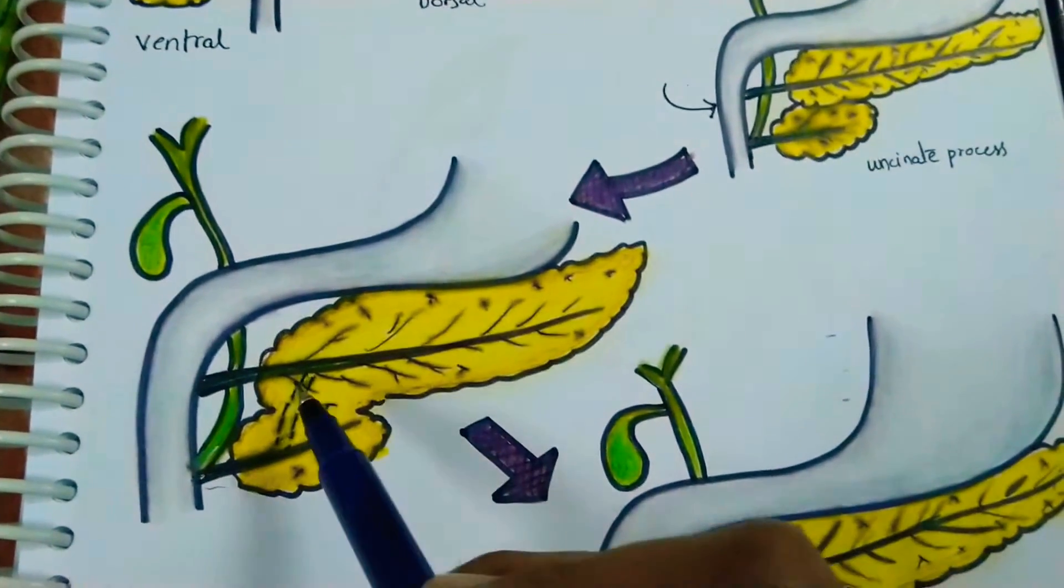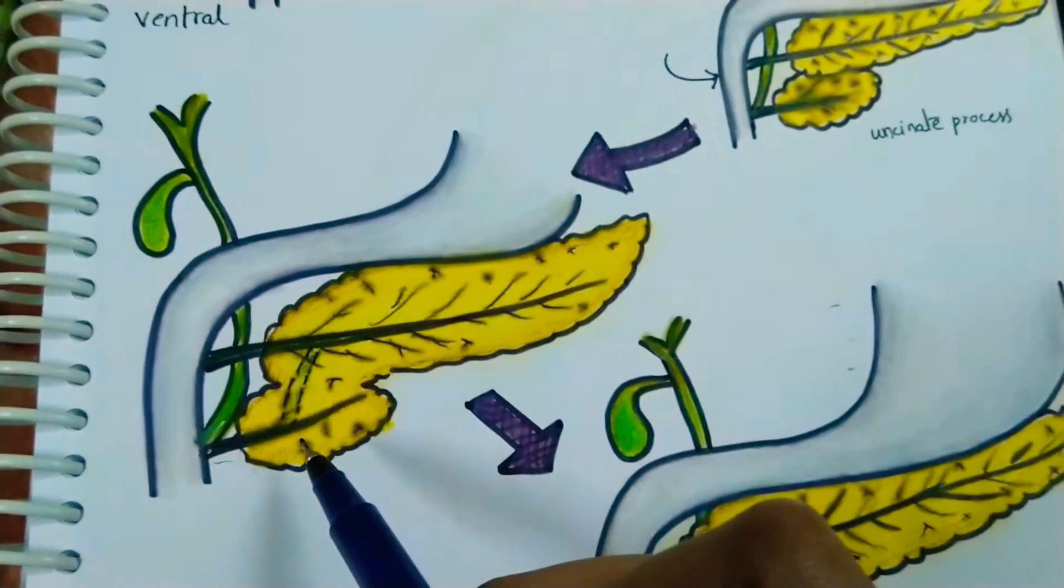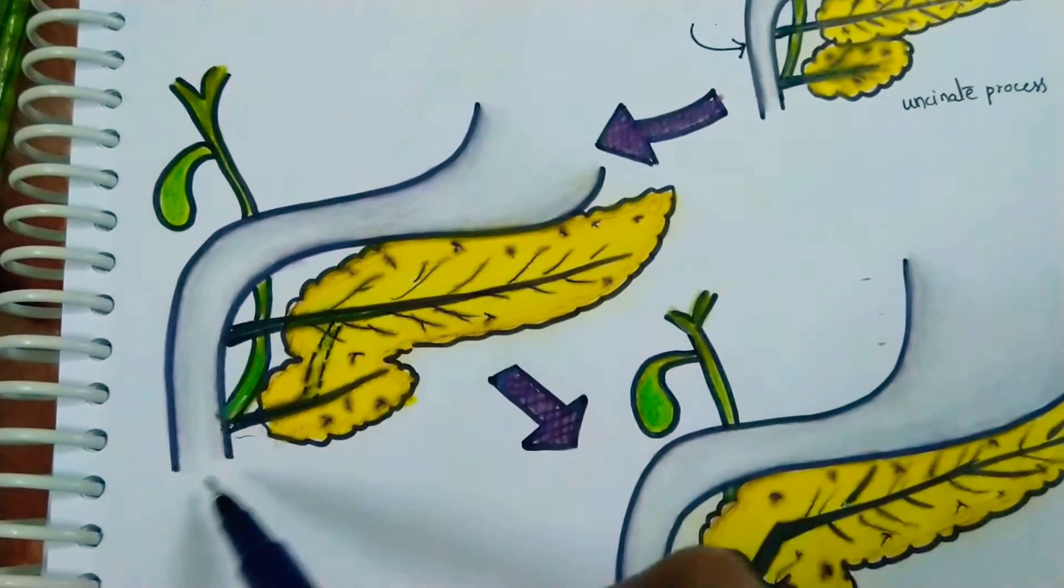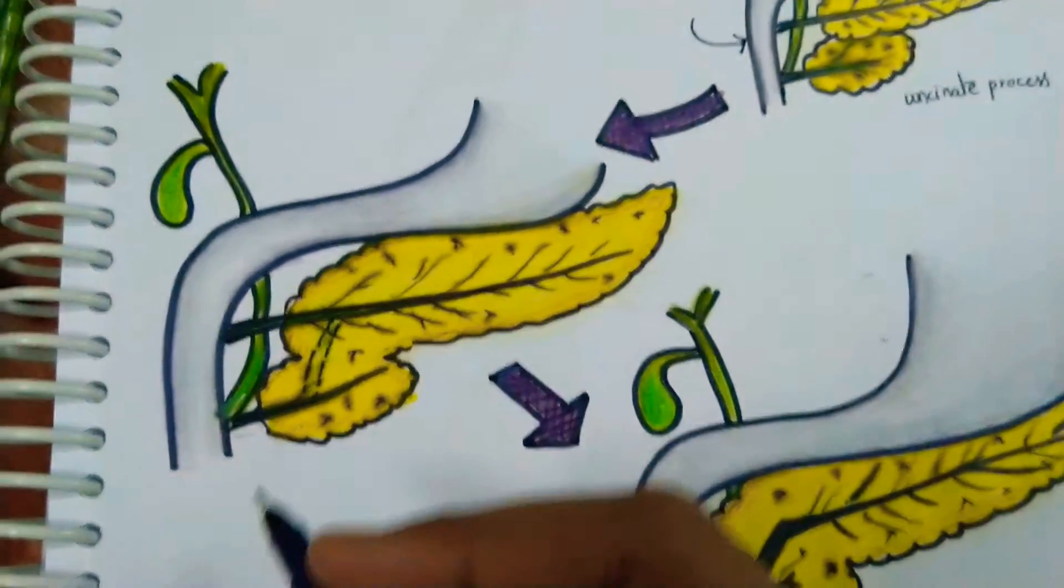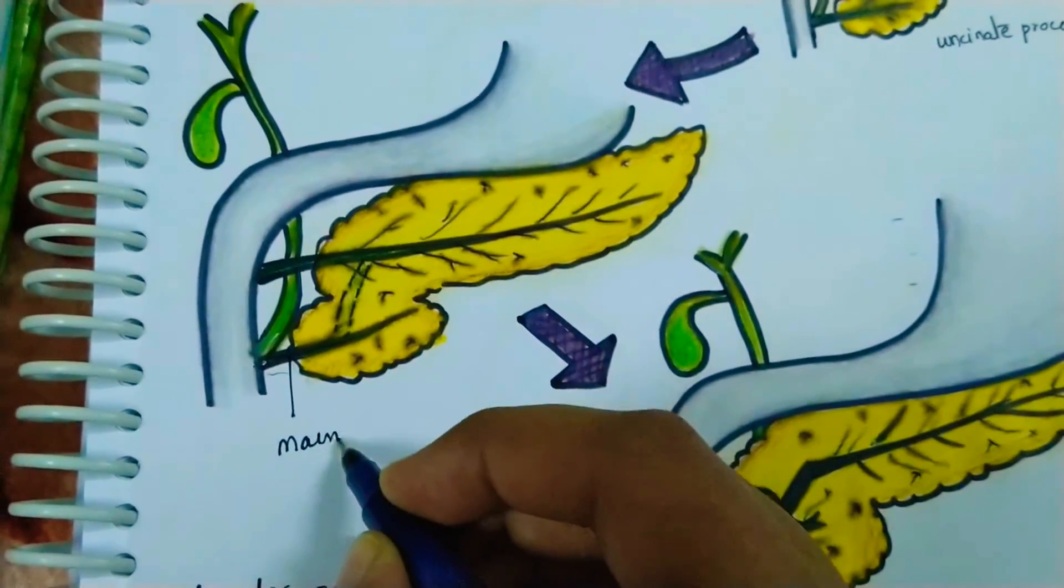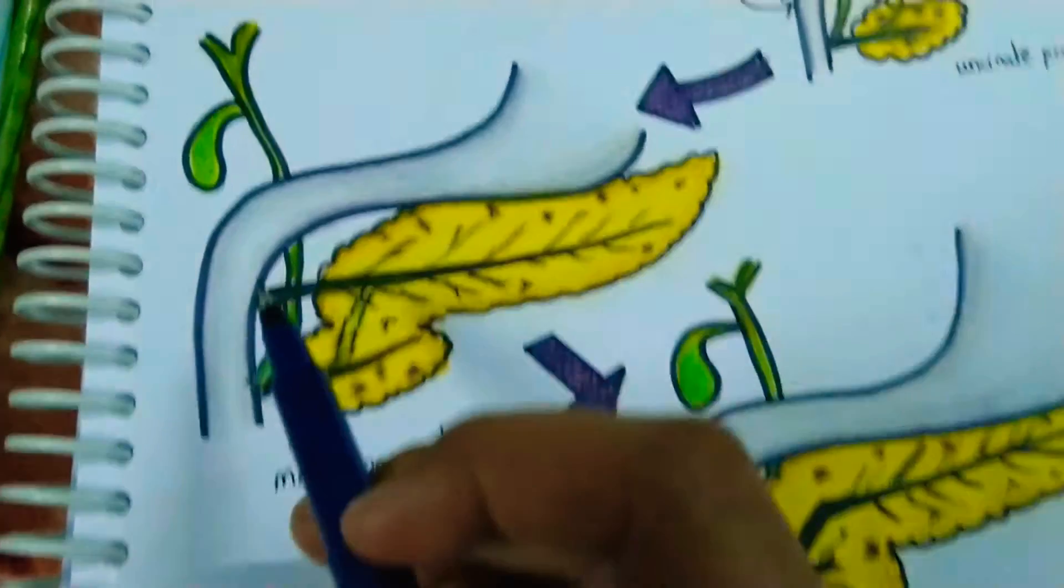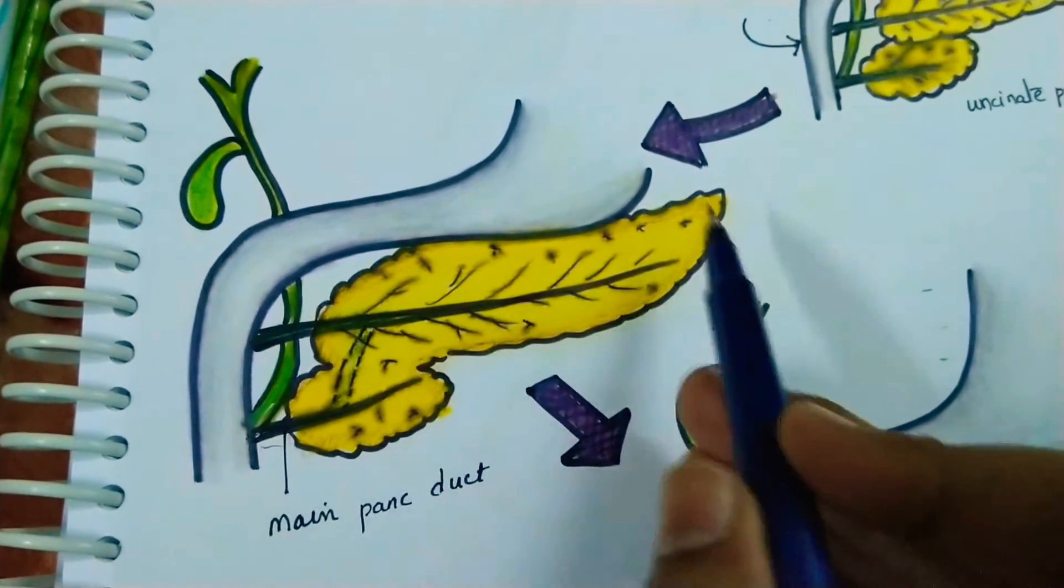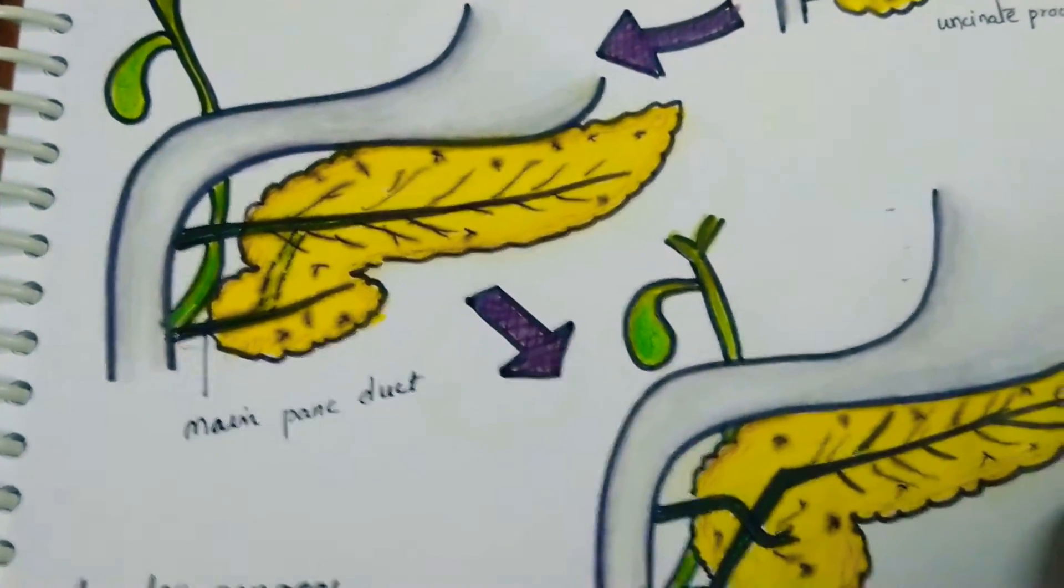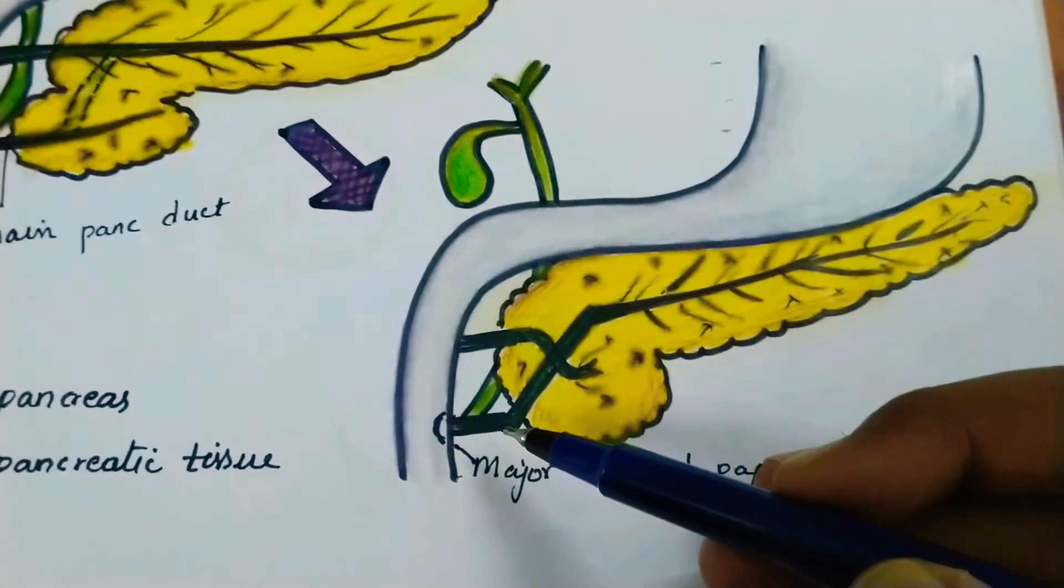Later, the ducts inside these buds anastomose with each other so that the duct of the ventral pancreatic bud becomes the main pancreatic duct, and the duct of the dorsal bud becomes the accessory pancreatic duct. The bile duct opens into the main pancreatic duct.